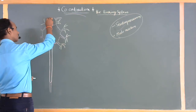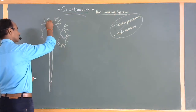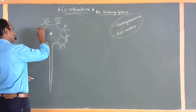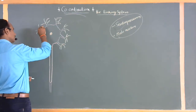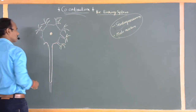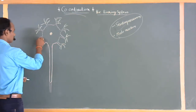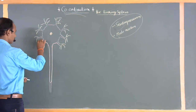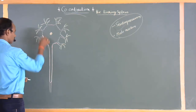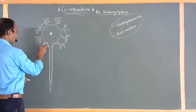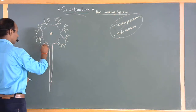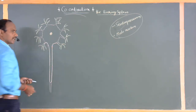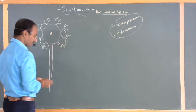Neurons are categorized into several types. Depending upon their structure — specifically the arrangement of dendrites and axons — neurons are categorized as unipolar neurons, bipolar neurons, and multipolar neurons.